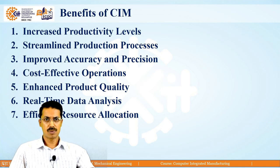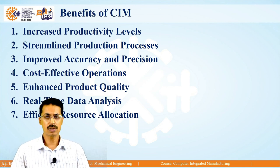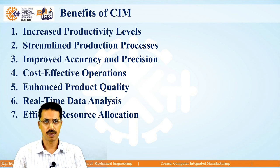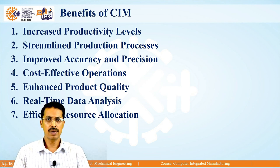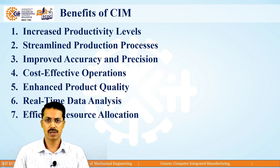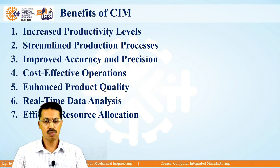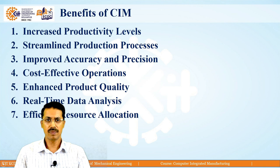First we will discuss the benefits of CIM — what are the benefits we are getting after implementation of this Computer Integrated Manufacturing system. The first benefit is increased productivity level. Overall, the productivity of any industry or firm will increase after implementation of CIM. This increase in productivity is due to the increased efficiency of the worker as well as low wastages.